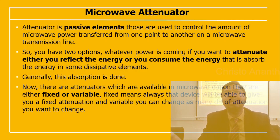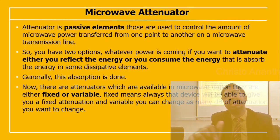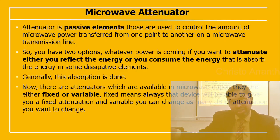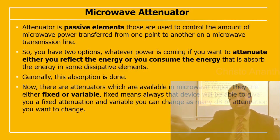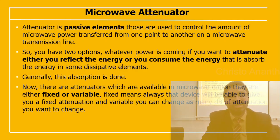Attenuators available in the microwave region are either fixed type or variable type. Fixed means the device produces a fixed amount of attenuation. Variable means the attenuation can be changed — you can vary it by as many decibels as needed.